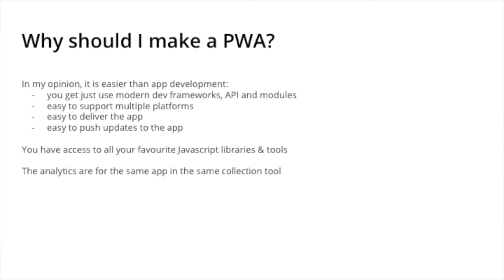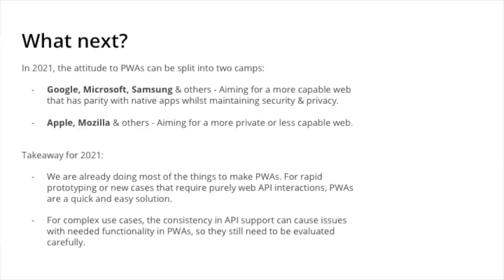What I've found — and what's maybe not always mentioned — is that your analytics or telemetry for the app is based on the same application every user is using. I've had cases where there's an Android version and a web-based version of an application and you have to use different analytics collection systems and try to merge that data to get an overview of how users are interacting. With a PWA you collect everything in the same tool.